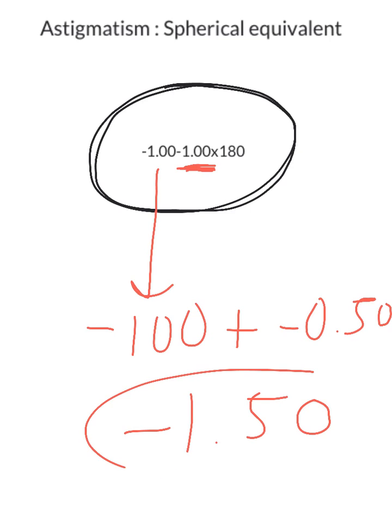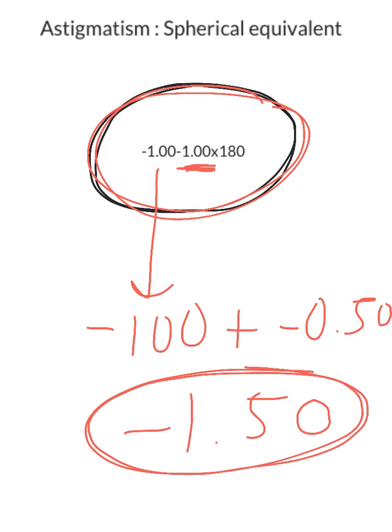This 150 is the spherical equivalent of this eyeglass prescription. This is the prescription you can give without astigmatism that would be the clearest. It won't be as clear as the prescription with astigmatism, but it's the closest you can get.